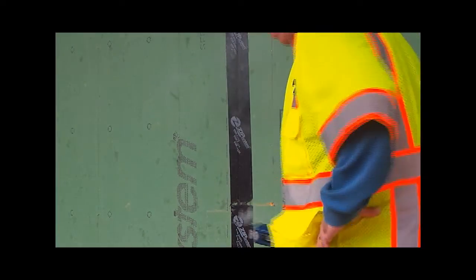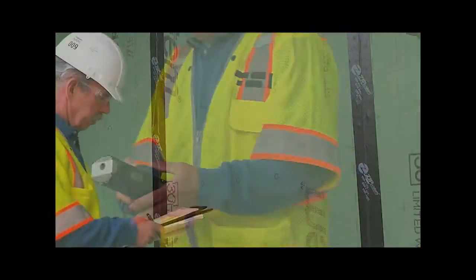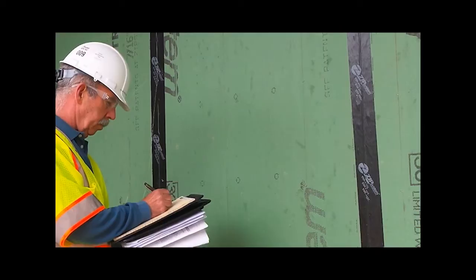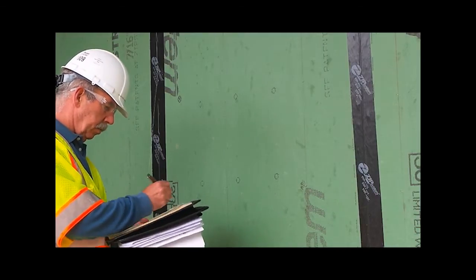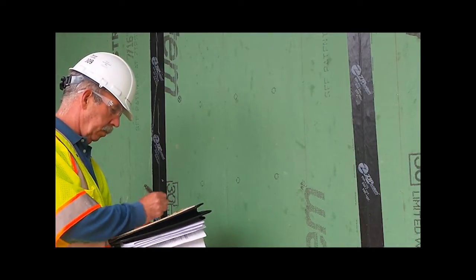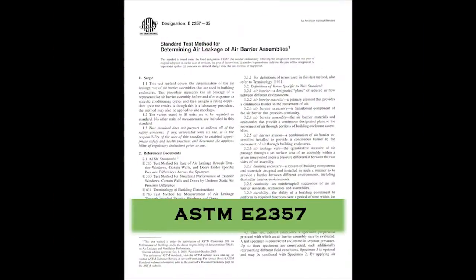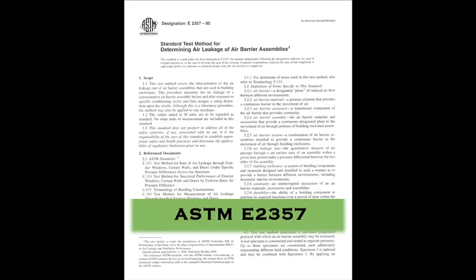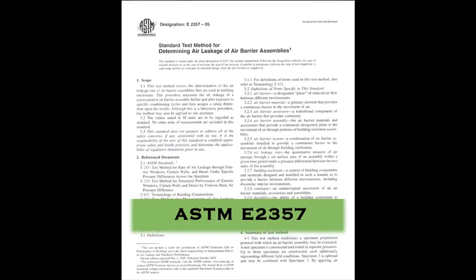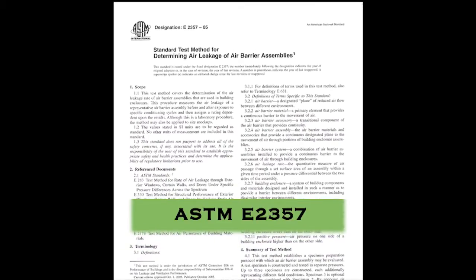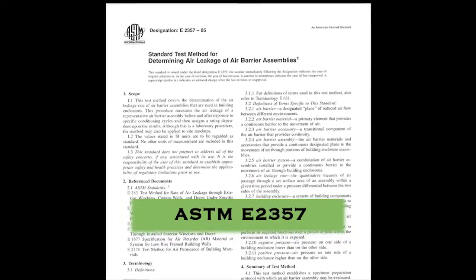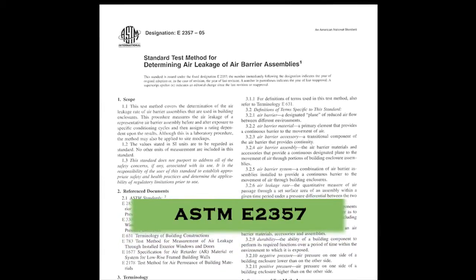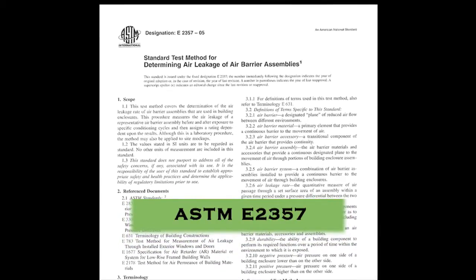Any location that is found to leak is then noted and corrective action can be taken. Other testing that TSI can perform with this chamber application is for conformance to the ASTM standard E-2357, titled Standard Test Method for Determining Air Leakage of Air Barrier Assemblies.